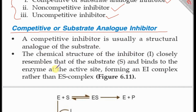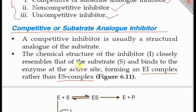The competitive inhibitor is usually a structural analog of the substrate — the chemical structure of the inhibitor closely resembles that of the substrate — and it binds to the enzyme at the active site, forming an enzyme-inhibitor complex rather than an enzyme-substrate complex. When the inhibitor occupies the active site, no product is formed and there is no enzymatic catalysis.